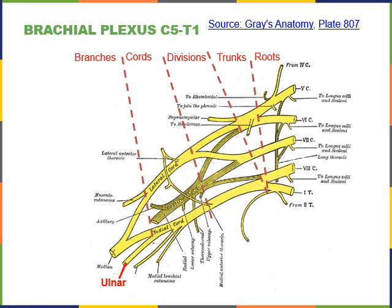The ulnar nerve forms as a branch of the medial cord and travels down the medial side of the anterior forearm, exciting the flexors of the wrist and fingers there — for example, the flexor carpi ulnaris and flexor digitorum profundus. The median nerve forms from branches of the lateral and medial cords, travels down the anterior forearm just lateral to the ulnar nerve, and excites most of the flexors of the wrist and fingers on the anterior forearm — for example, flexor carpi radialis and flexor digitorum superficialis.